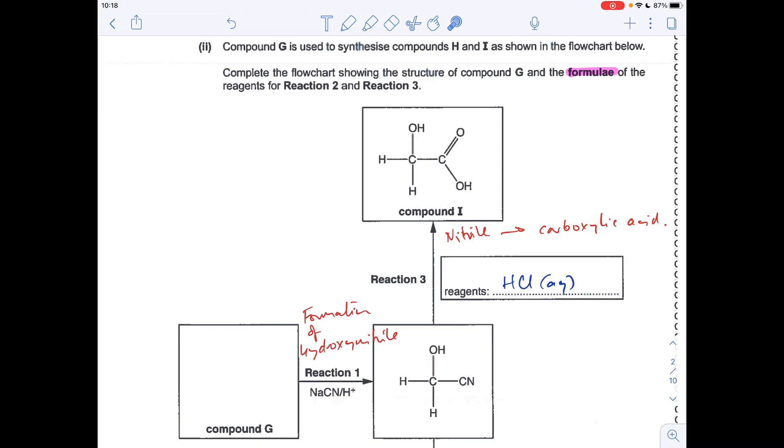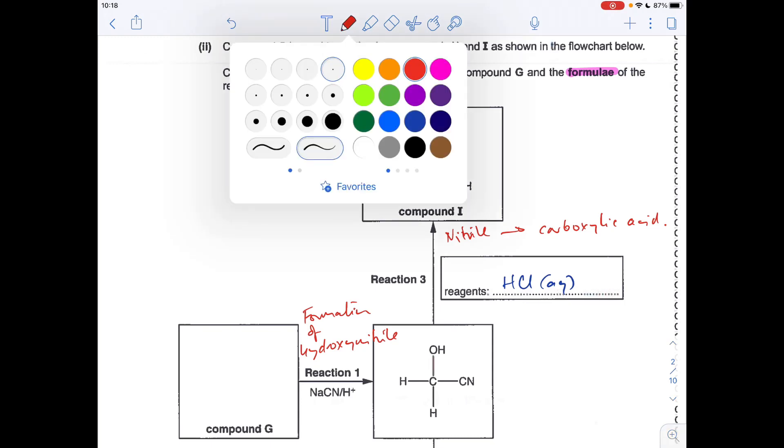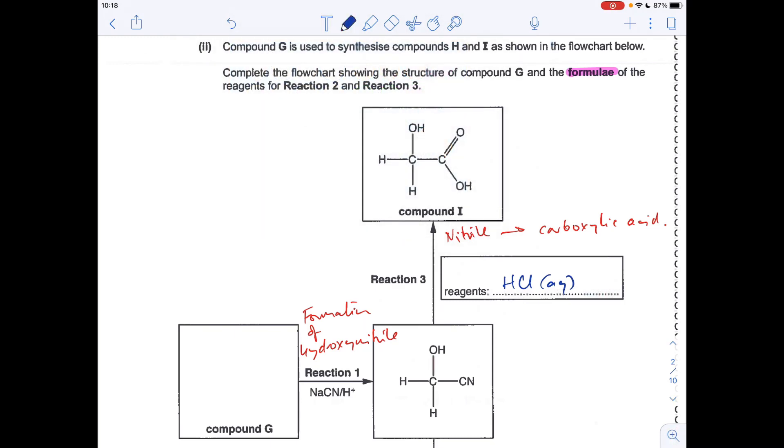Reaction one now, so we're forming a hydroxynitrile. So you would do that from a carbonyl compound. And so the carbonyl compound that would create that would be methanol, just with the one carbon, because there's two in the product.